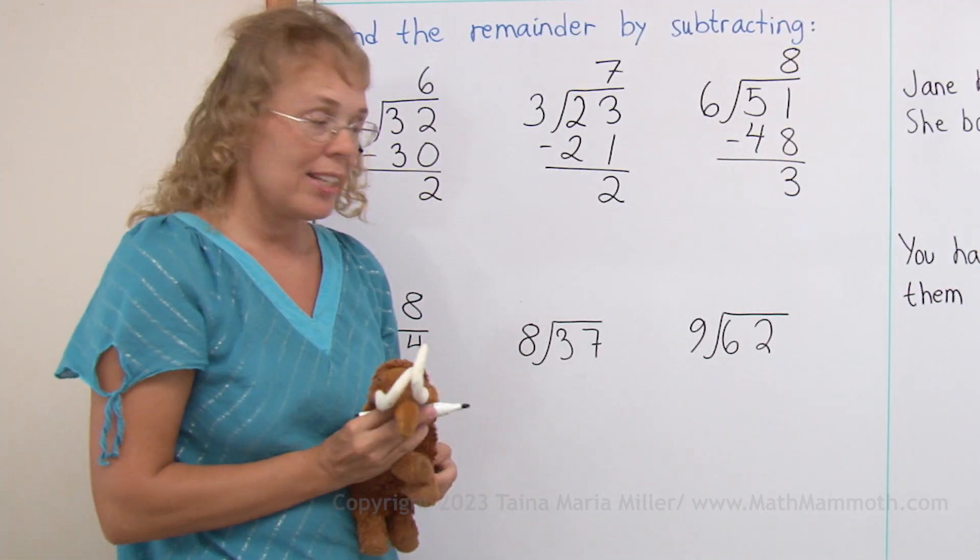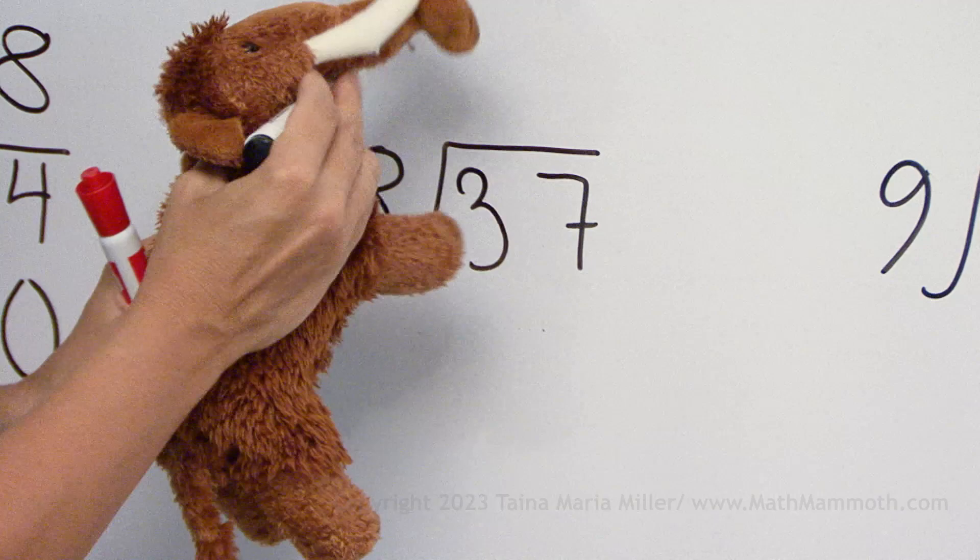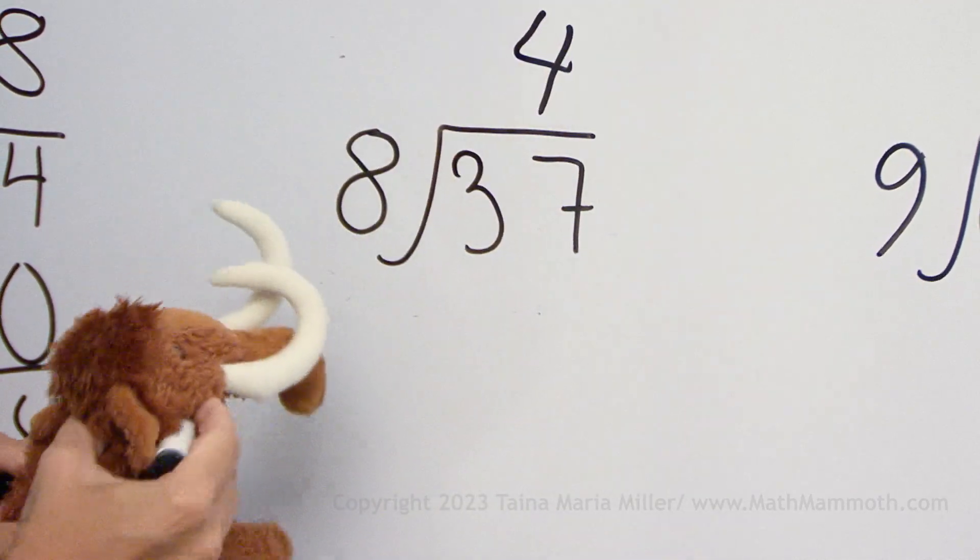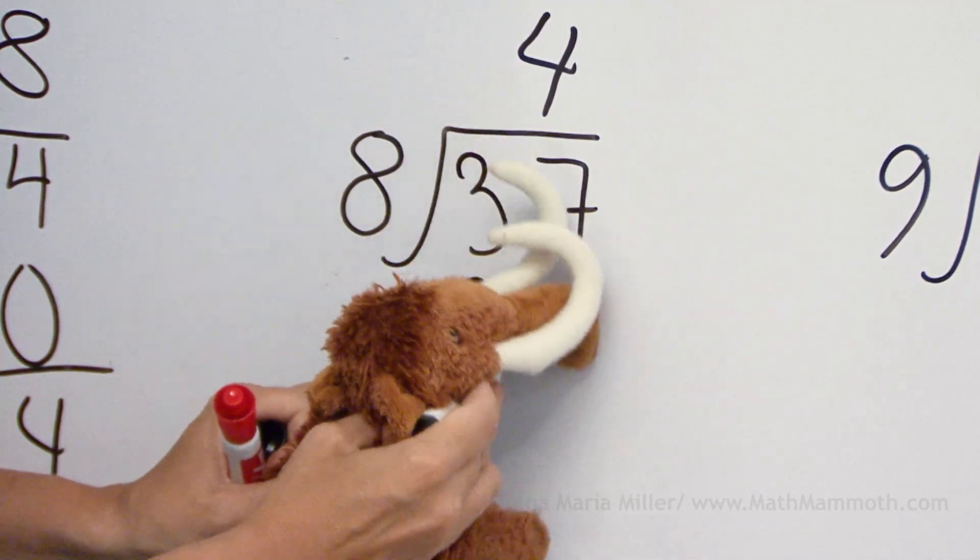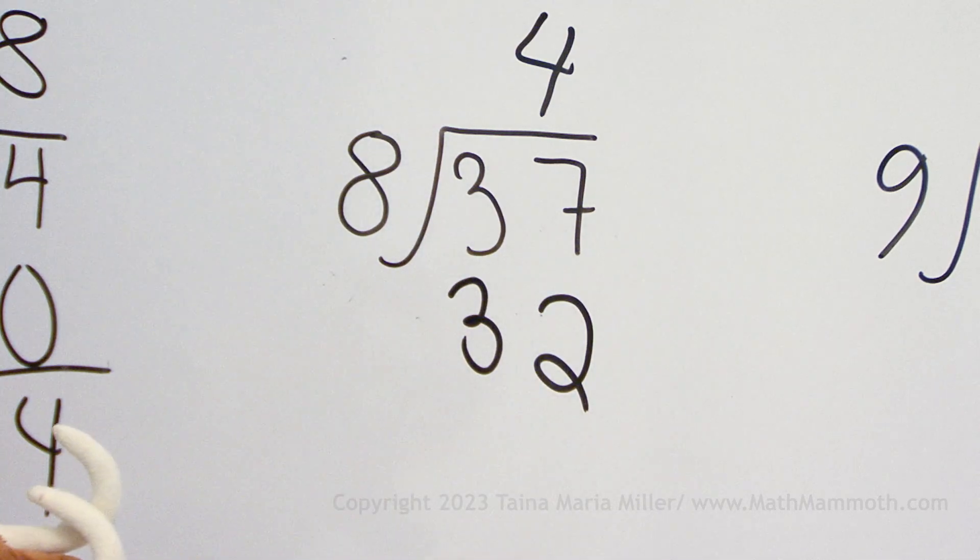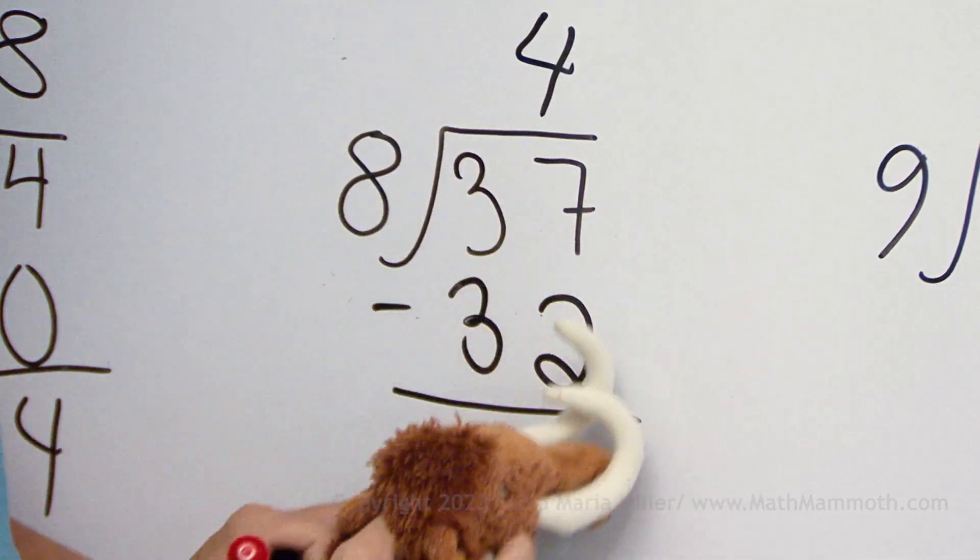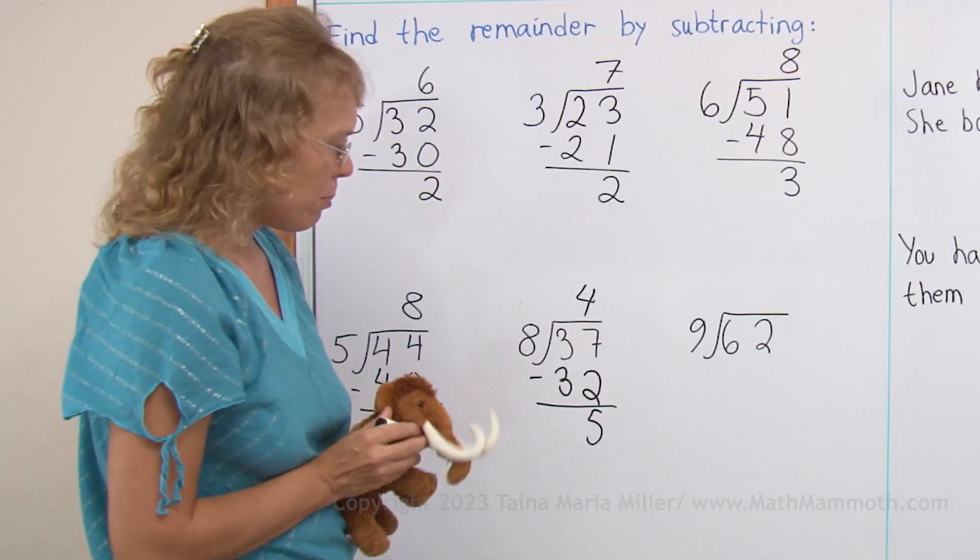Try the next one. How many 8's in 37? 4 eights. Right, that's correct. 4 times 8. Yeah, that's correct too. You're doing good Mati, keep on going, one more.